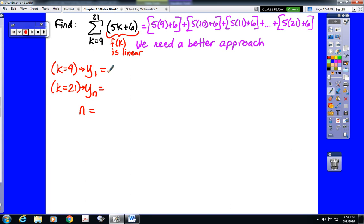So the first term, we would plug the bottom number in for k. So that's 5 times 9 plus 6. 5 times 9 is 45, plus 6 would be 51, is the first term. We plug in the top number for k, and that would give us the last term. 5 times 21 plus 6 is 105 plus 6, or 111.